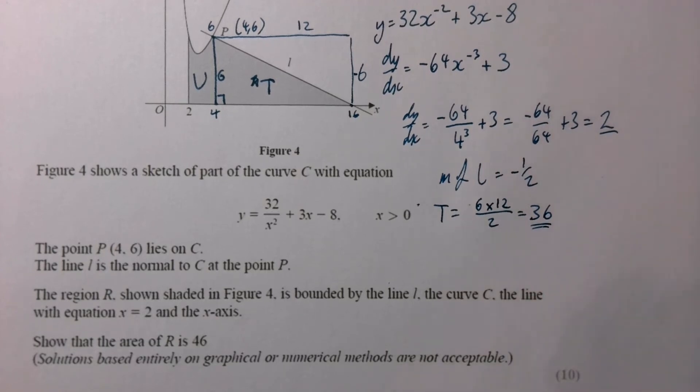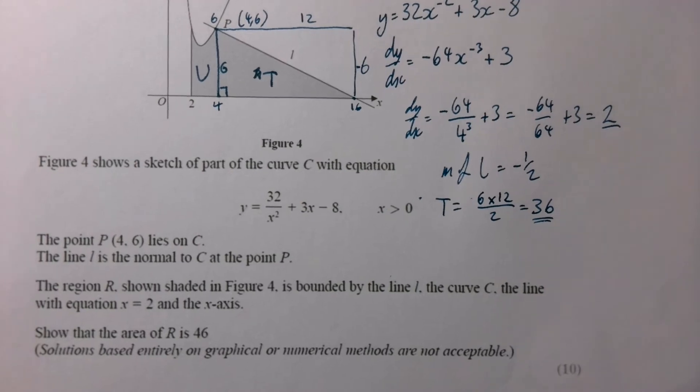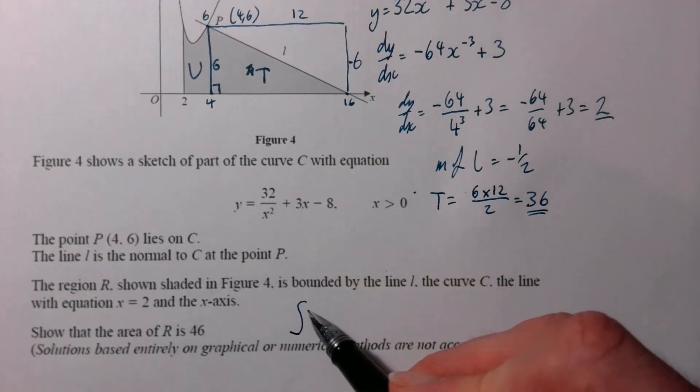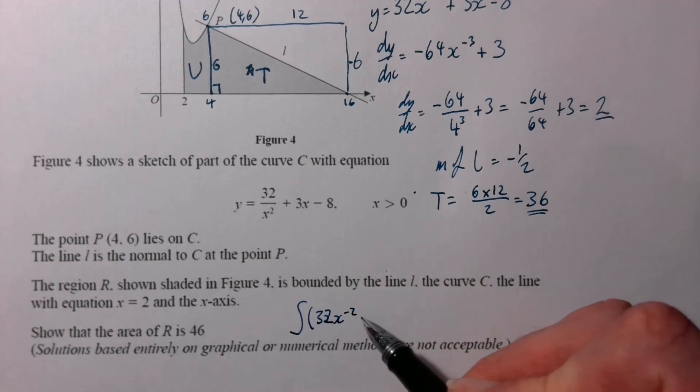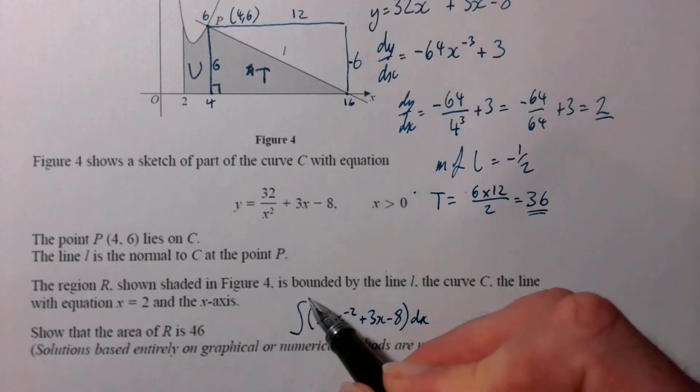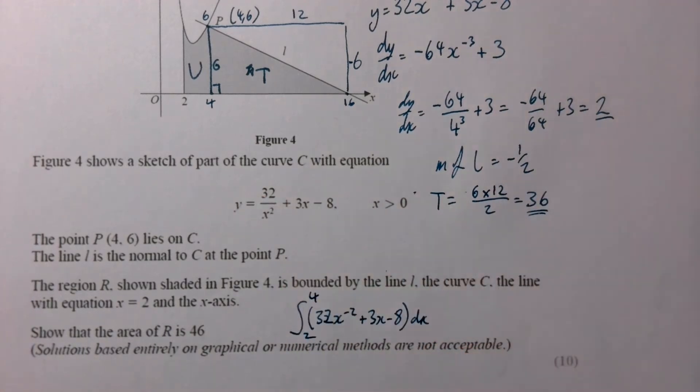So now what we need to do is show that U is equal to 10. Well, we need to start off by integrating that, so we're going to be integrating 32x to the negative 2 plus 3x take 8, dx, and we're going to be doing that between the points 4 and 2.